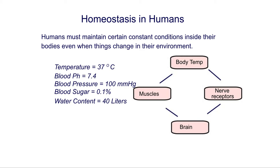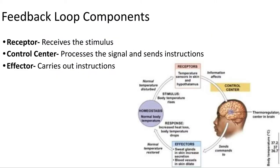Our blood pH is 7.4, which is slightly alkaline — 7 is neutral, so blood is pretty close to 7 but slightly alkaline at 7.4. The homeostatic level of blood pressure is 100 millimeters of mercury. We try to keep our blood sugar at 0.1 percent, and the water content in the average human body stays at 40 liters.